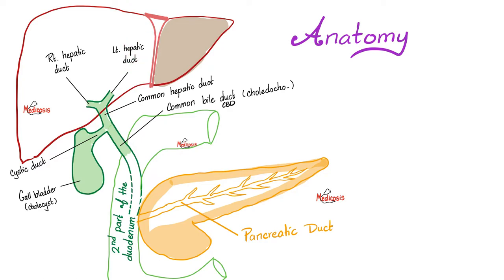First, the anatomy. Here is your liver: right lobe, left lobe. The right lobe gives us the right hepatic duct; the left lobe gives us the left hepatic duct. They join to form the common hepatic duct. The common hepatic duct plus the cystic duct equals the common bile duct. The common bile duct with the main pancreatic duct opens at the ampulla of Vater into the posteromedial aspect of the second part of the duodenum.